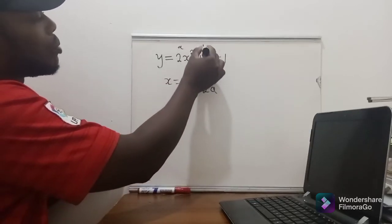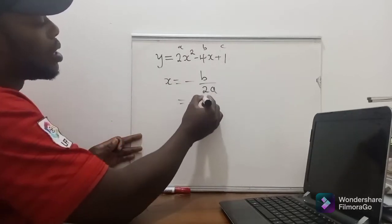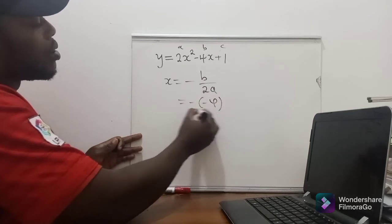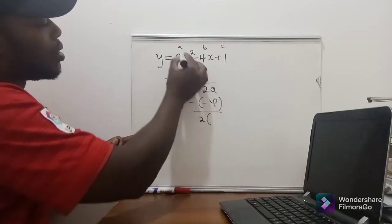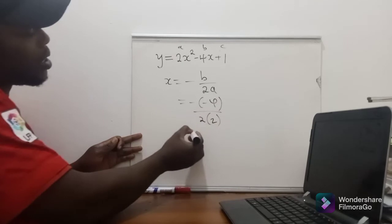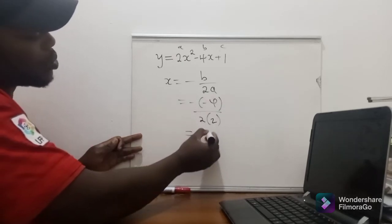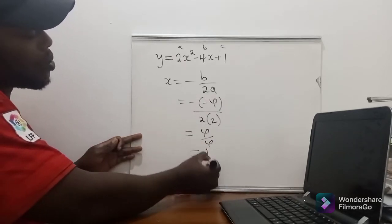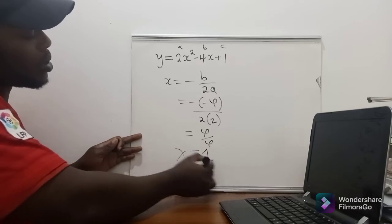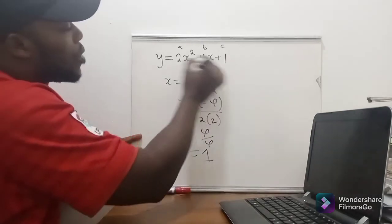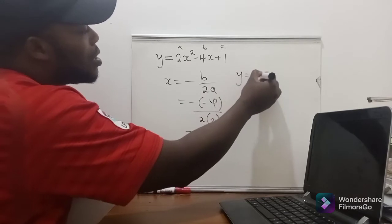Our b, we know that this is our a, b, and c. So our b is negative 4 over 2, our a is 2, such that when we solve here it will just be 4 divided by 4, of which our x value will just be equal to 1. So for us to find the y value, we do what we did...